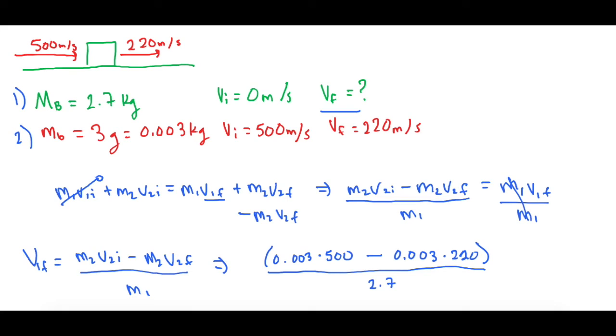So another way we could have done this, since the mass of the bullet isn't changing at all, we could have taken the difference from these two velocities, 280 meters per second, times that by the mass, and divide it by the mass of the block. And that would give us the same answer. But since we did it this way, let's go ahead and finish it out.